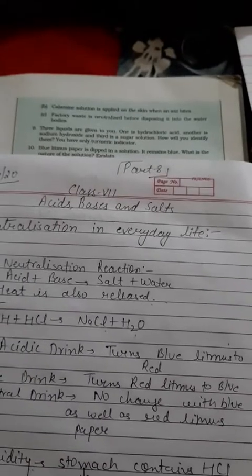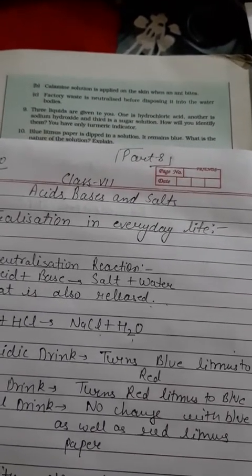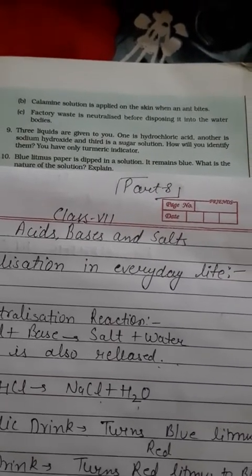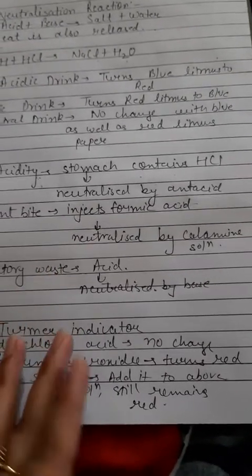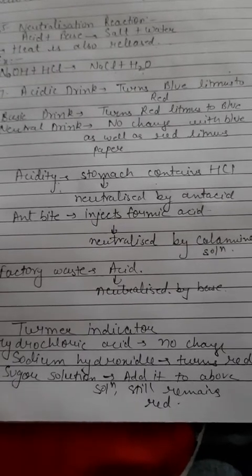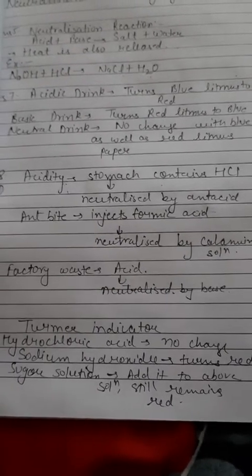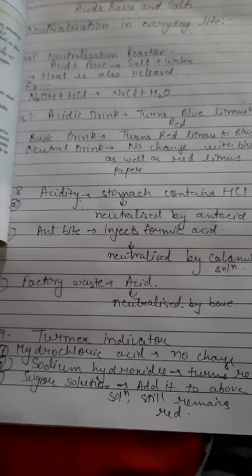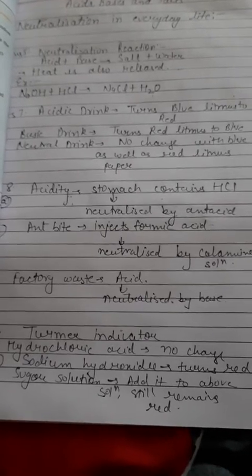Question 8C: factory waste is neutralized before disposing it into water bodies — why? If acidic or basic factory waste is directly disposed into water bodies, it will disturb aquatic life. So it is better to neutralize it before disposing it into the water bodies, to prevent harmful effects on aquatic life. That is why factory waste is neutralized before disposal.